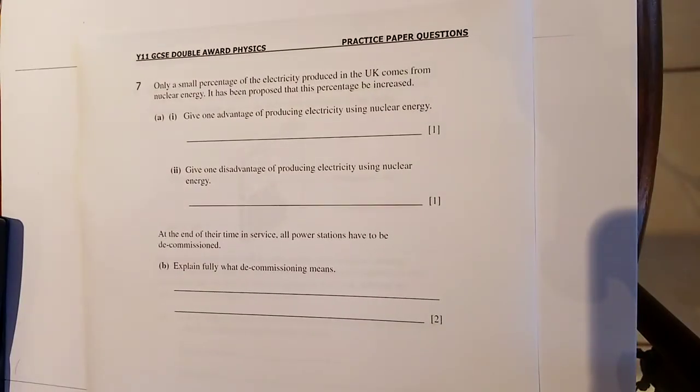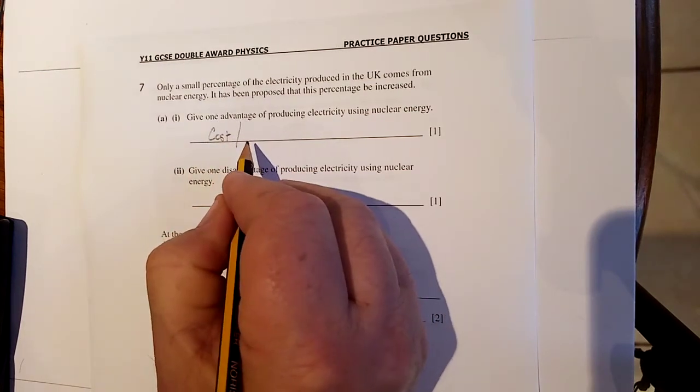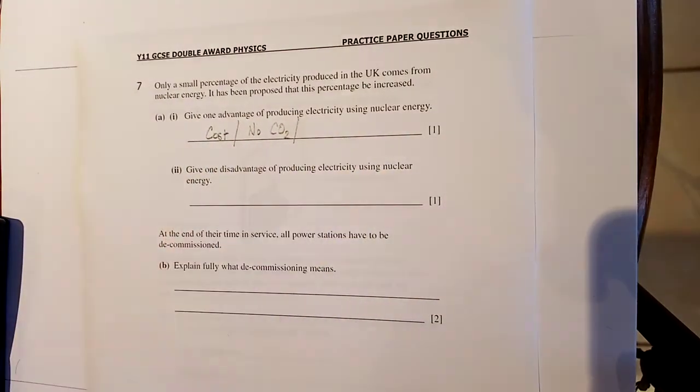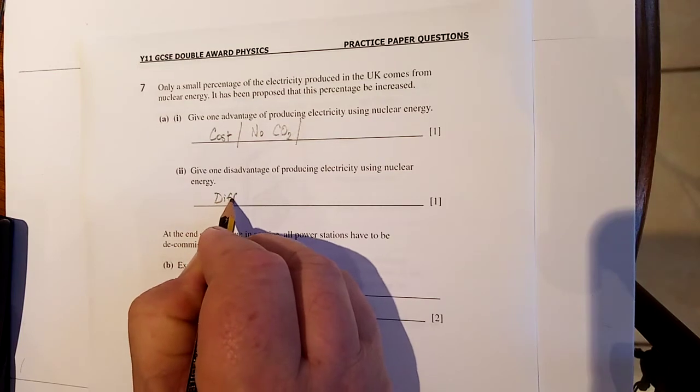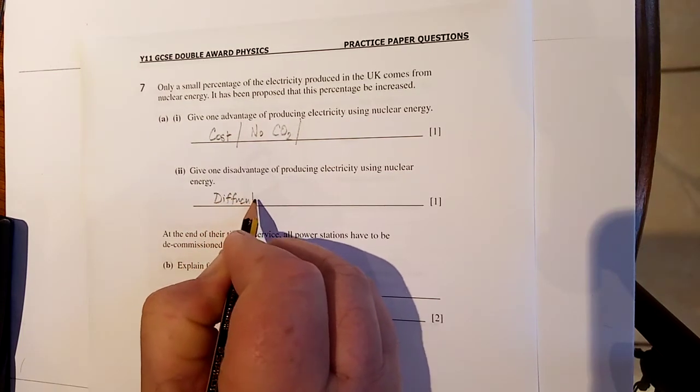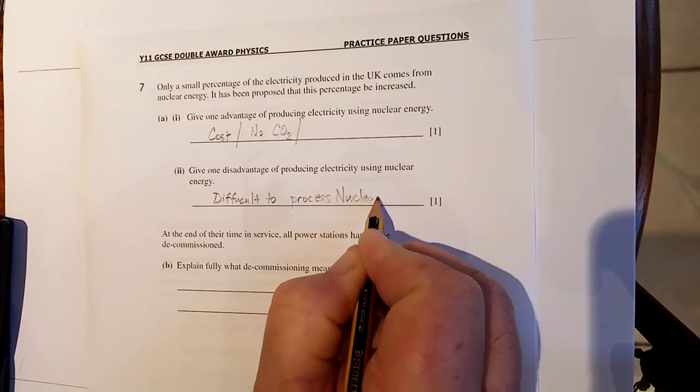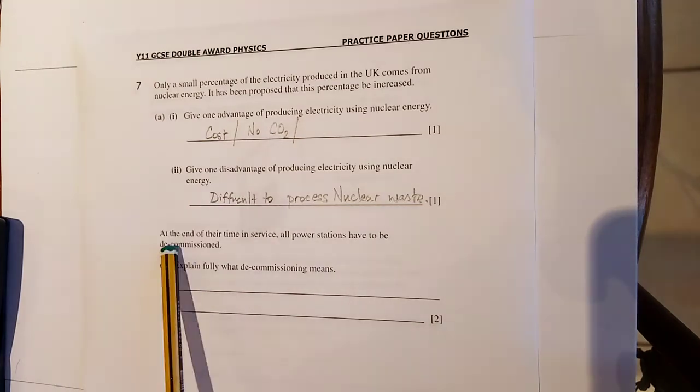Only a small percentage of electricity produced in the UK comes from nuclear energy. It has been proposed that this percentage be increased. Give one advantage of producing electricity using nuclear energy. There's more or less two. Cost, it's cheap and the other thing is no CO2, no carbon dioxide for greenhouse gas. Full sentence for you, I'm going to tell you what you write down. Give one disadvantage of producing electricity. The answer is difficult to process waste, to process nuclear waste. Now again, you practice the full sentence, the capital letter, the full stop, the spelling.